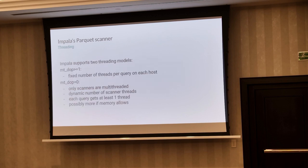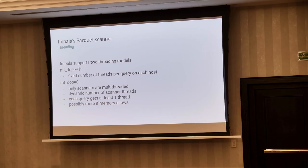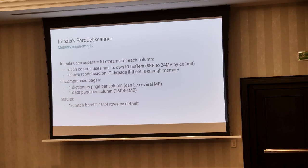Regarding threading, scanners are handled in a special way. Impala can handle threading in two ways. In one case, we set the exact number of threads used by a Fragment Instance execution unit. There is also another, more legacy but in some ways more sophisticated solution where scanners can decide adaptively how many threads to use — starting with one, but if there is enough memory and not many scanners are used in parallel, we start new scanner threads. We try to estimate memory requirements, mainly with IO buffer requirements, and try to read every column in separate streams with some read-ahead.